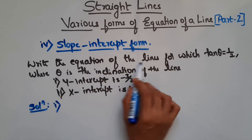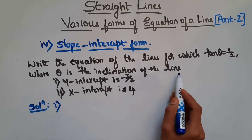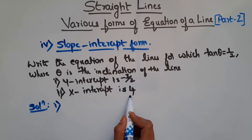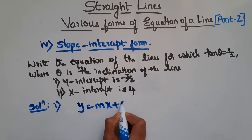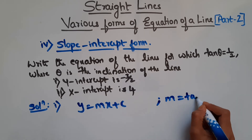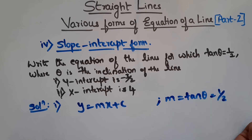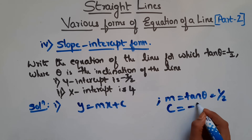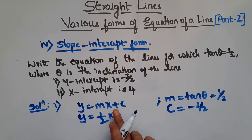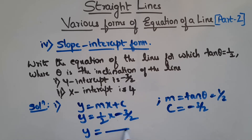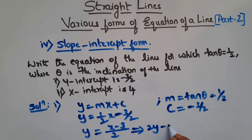So now let us see this problem. It says write the equation of the line for which tan theta is 1/2, where theta is the inclination of the line, and we have y-intercept is minus 3/2 and x-intercept is 4. When y-intercept and slope is given we use y equals mx plus c. Slope is tan theta, so m is 1/2. C means y-intercept, which is minus 3/2. Substituting: y equals (1/2)x plus (minus 3/2), which gives y equals (x minus 3)/2. This implies 2y minus x plus 3 equals 0. So this is your equation of the line.